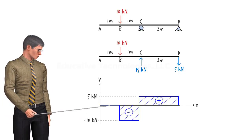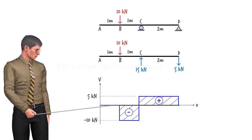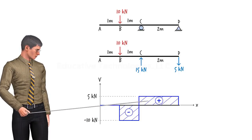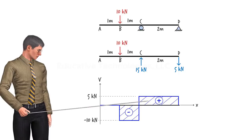In the left segment, shear is zero. In the middle segment, shear is negative. And in the right segment, we have a positive shear.